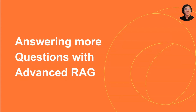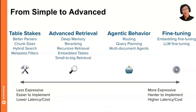Now that you have all that in place, it's time to think about how we can more principally solve some of these pain points through a more structured fashion. Basically, given a pain point, what are the set of techniques I can apply to actually improve my RAG system for different capabilities?